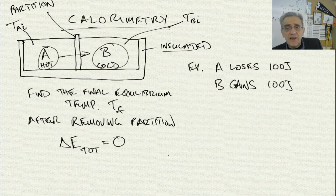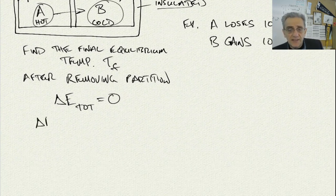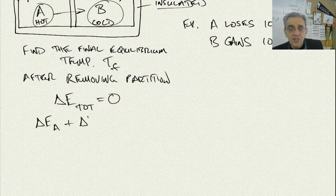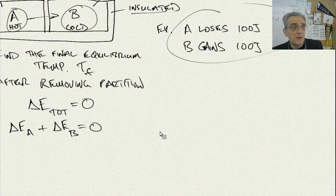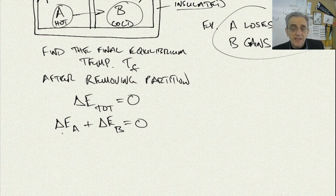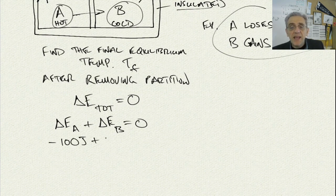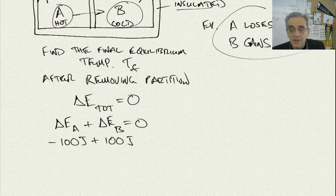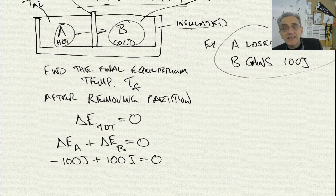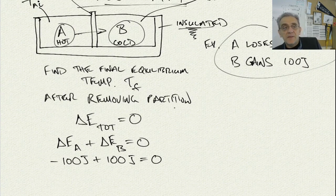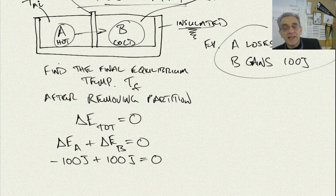That means that if A loses energy and B gains energy, the change in energy of A and the change in energy of B is going to be zero. If we take this example that I have over here with the 100 joules, then A has a loss of 100 joules and B has a gain of 100 joules. And the total, as one loses 100 the other gains 100, the total is still zero. Because this is insulated, that means whatever one loses the other one must gain.